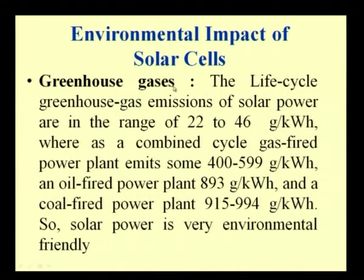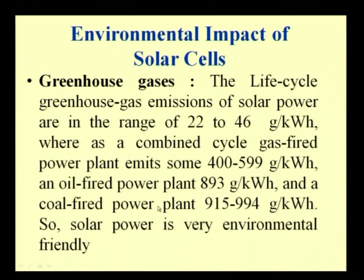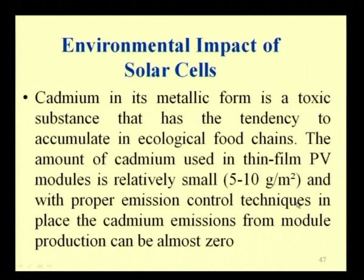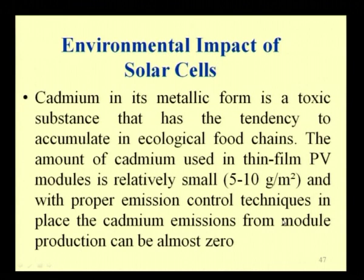The life cycle greenhouse gas emissions of solar power are in the range of 22 to 42 gram per kilowatt hour, whereas a combined cycle gas-fired power plant emits 400 to 599 gram, an oil-fired power plant 893 gram, and a coal-fired power plant 915 to 994 gram per kilowatt hour. Therefore, solar power is very environment friendly. One disadvantage is that cadmium in its metallic form is a toxic substance with a tendency to accumulate in ecological food chains. The amount of cadmium used in thin-film photovoltaic modules is relatively small — 5 to 10 gram per meter square — and with proper emission control techniques, cadmium emissions from module production can be almost zero.